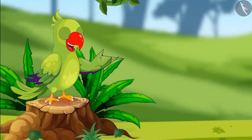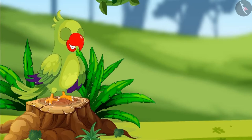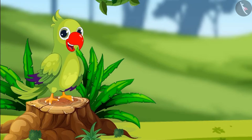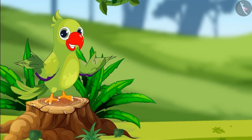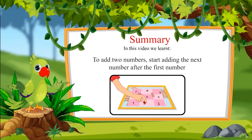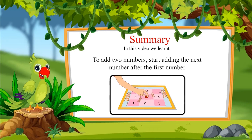So children, I hope you had fun watching the game of snakes and ladder. You too can now add 2 numbers like Chotu and Pinky, isn't it? That's all on this topic. In this video, we learned that to add any 2 numbers, we need to start adding the next number after the first number. I hope that you have understood this topic properly. Goodbye, friends.